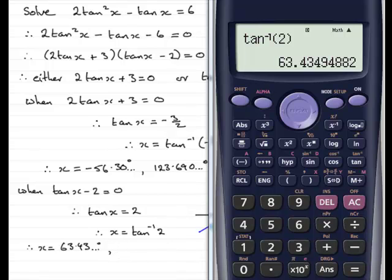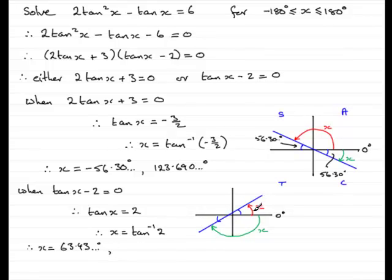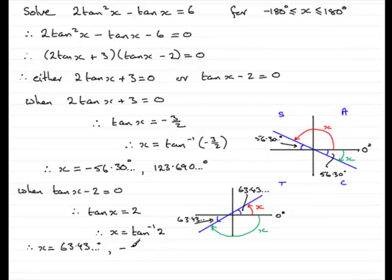So 63.43 degrees is the red angle in the first quadrant. The small blue arc in the third quadrant is also 63.43 degrees in size. The red solution is 63.43 degrees. For the green angle — the negative turn solution — the magnitude is 180 minus 63.43 degrees, but it's a negative angle, so on the calculator that gives minus 116.56 degrees.